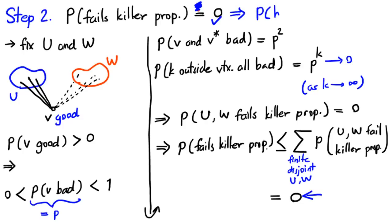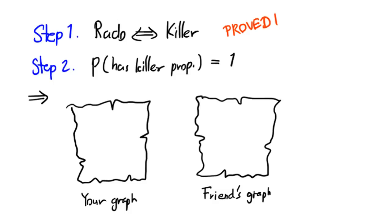Hence, with probability 1, our random graph has the killer property. Now that both steps are proven, we can safely say that both you and your friend have drawn the Rado graph with probability 1, and so your graphs will be isomorphic with probability 1.